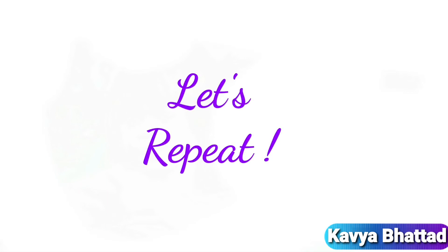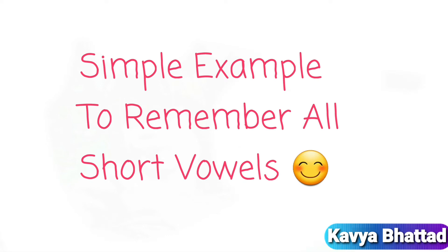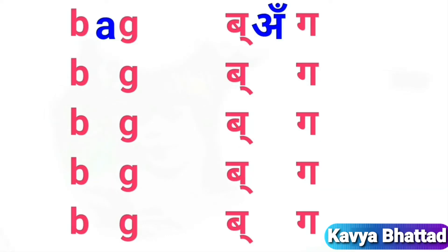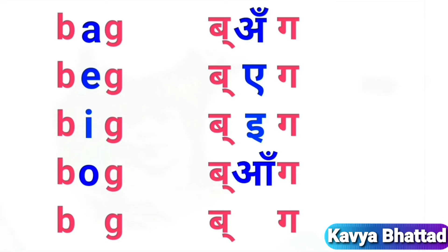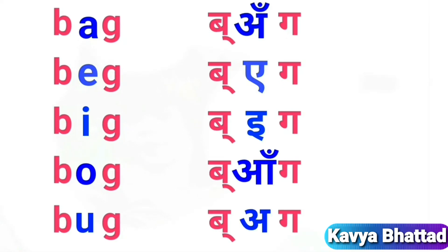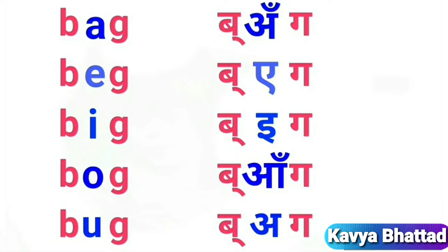Let's repeat one more time. Notice how the vowel changes the word: bag, big, bog, bug — the consonants B and G stay the same while only the vowel changes.